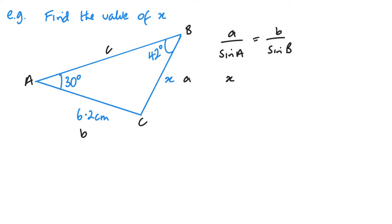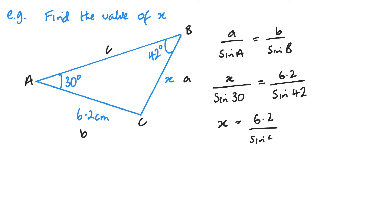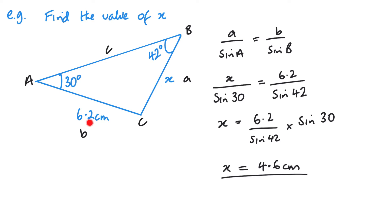I fill in everything I know. a is X, capital A is 30 degrees, small b is 6.2, and capital B is 42 degrees. Then it's a matter of rearranging: I've got 6.2 over sine 42, multiplied by sine 30. Going to my calculator, I get 4.6 centimetres. That does sound about right — 6.2 is opposite 42, and this one's opposite a smaller angle, so it should be a slightly smaller side.